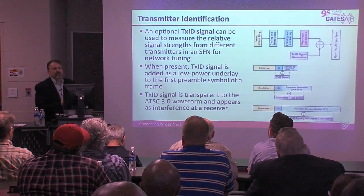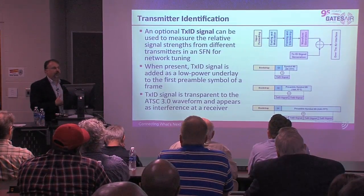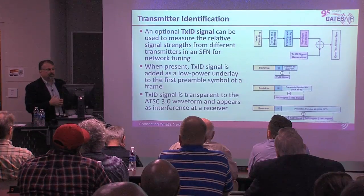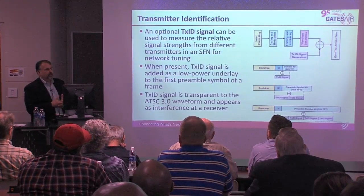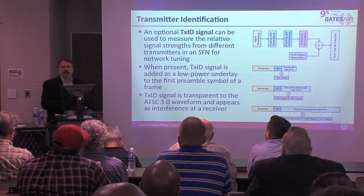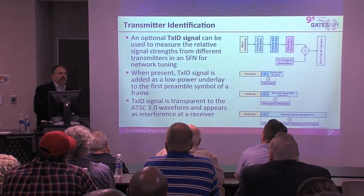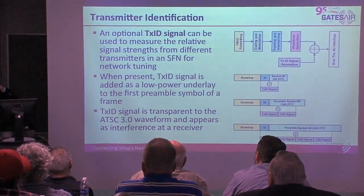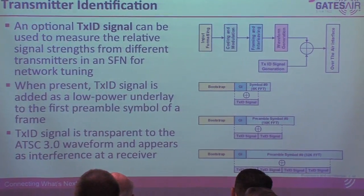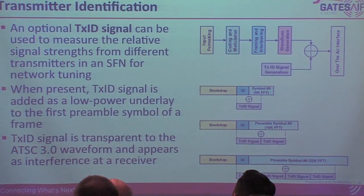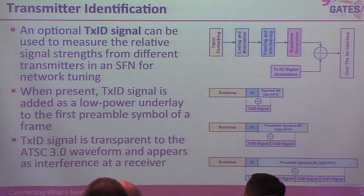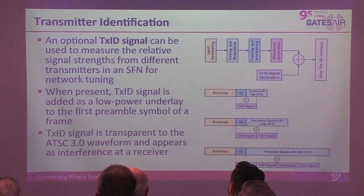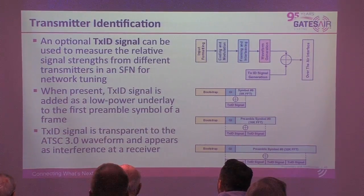There's also the ability to insert a transmitter identifier in the physical layer. If you're out in the field doing testing, test gear can identify which transmitter a signal is coming from. This is a great help for SFN work — rather than having to shut down transmitters one at a time, a piece of gear can tell you which carrier you're receiving where.